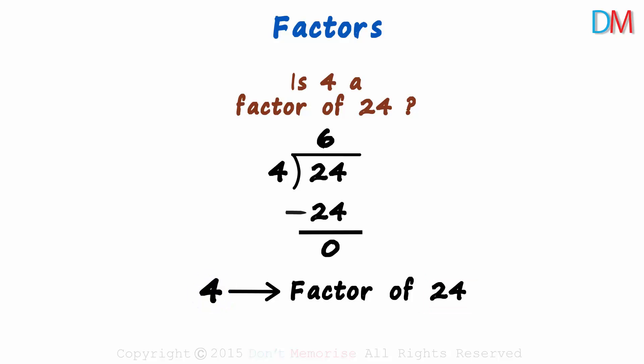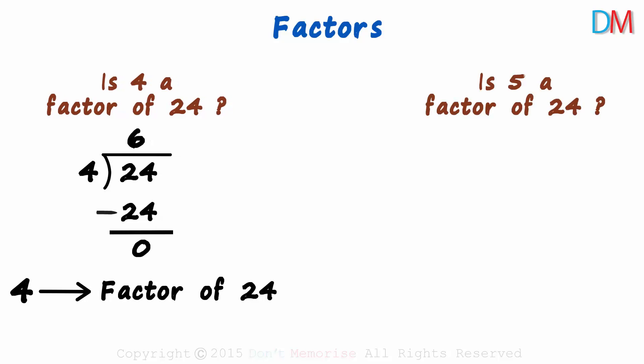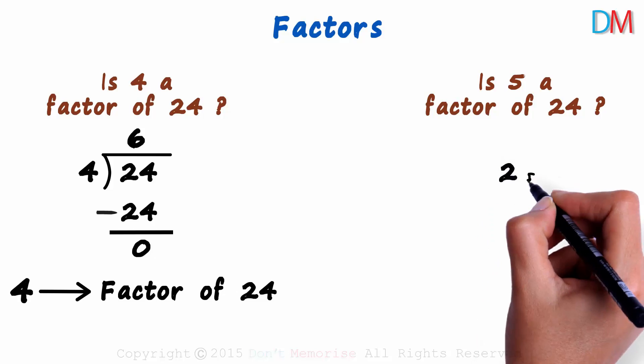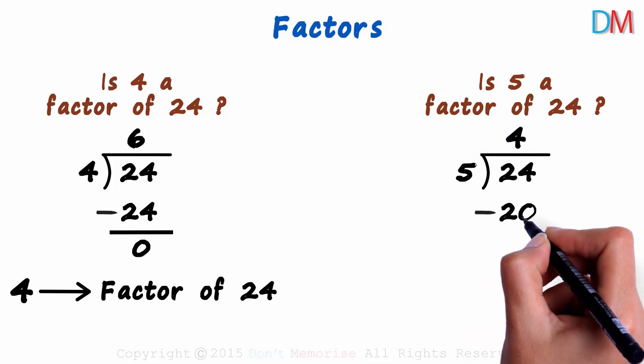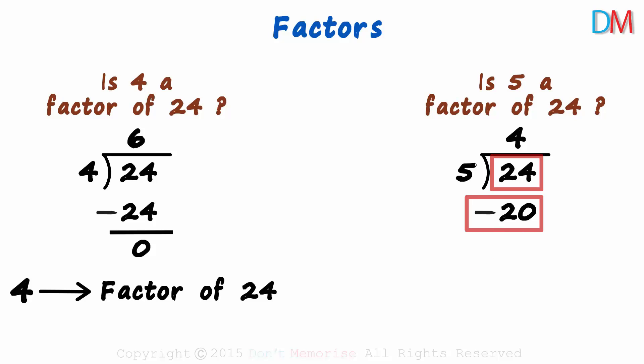Now I would like you to answer the next question. Is 5 a factor of 24? To know the answer, let's try dividing 24 by 5. 5 times 4 is 20, and 24 minus 20 gives us 4. We get the quotient as 4 and the remainder as 4.